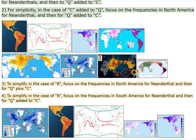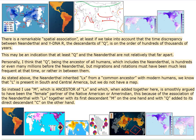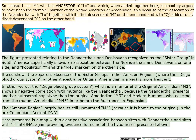There is a remarkable spatial association, at least if we take into account that the time discrepancy between Neanderthal and Y-DNA-R, the descendants of Q, is on the order of hundreds of thousands of years. This may be an indication that at least Q and the Neanderthal are not relatively that far apart. Personally, I think that Q, being the ancestor of all humans including the Neanderthal, is hundreds or even many millions of years before the Neanderthal, but migrations and rotations must have been much less frequent in between them. As stated above, the Neanderthal inherited LX from a common ancestor with modern humans.